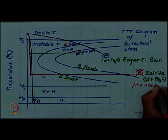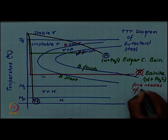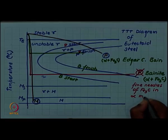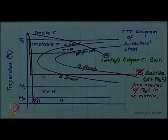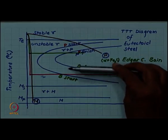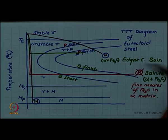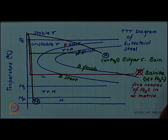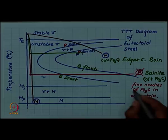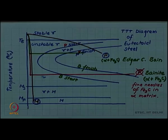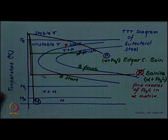Fine needles of Fe3C in alpha matrix. This is a simple description. Of course, there are different forms of Bainite also depending upon the temperature. Close to the nose we have upper Bainite and lower down above MS we have lower Bainite and so on. We will not go into those distinctions and there are differences in their microstructure, but one form of Bainite which we will accept for our purpose is fine needles of Fe3C in the alpha matrix. This is how Bainite differs from pearlite, which was alternating plates of alpha and Fe3C.